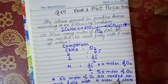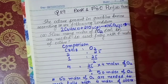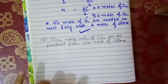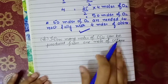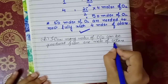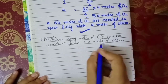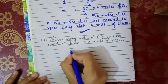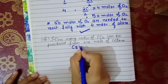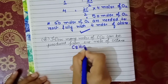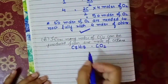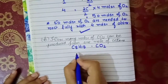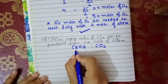The next question is: how many moles of CO₂ can be produced from one mole of octane? Again we are given moles of octane and we have to find moles of CO₂. We are going to write octane on the left side and CO₂ on the right side. According to the equation there are two moles of octane that produce 16 moles of CO₂.